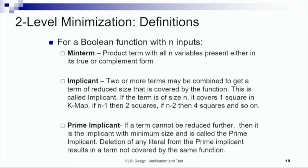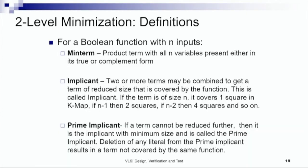Before proceeding further, we will understand a few basic definitions. First, the definition of a min term: a min term is a product term in the sum-of-products expression with all n variables present, either in true or complement form. What is an implicant? Two or more product terms, which could be min terms, may be combined to get a product term of reduced size that covers both the original product terms. This reduced product term is called an implicant.